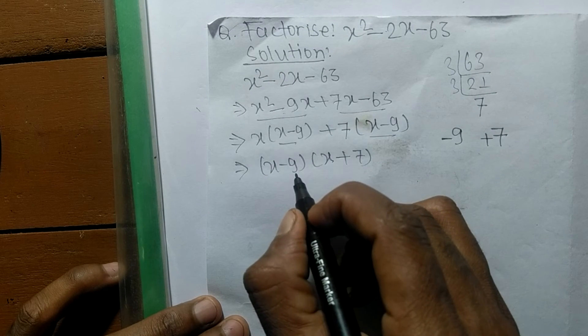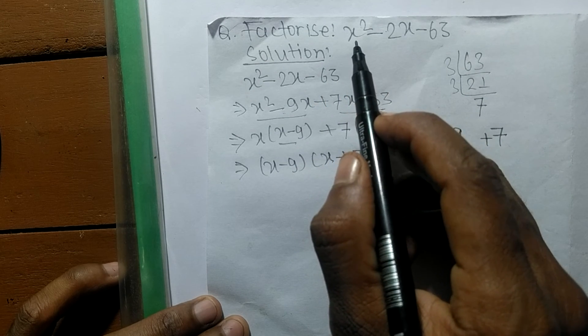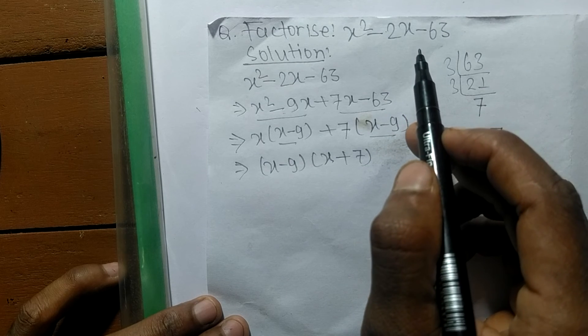So x minus 9 and x plus 7 are the prime factors of x square minus 2x minus 63.